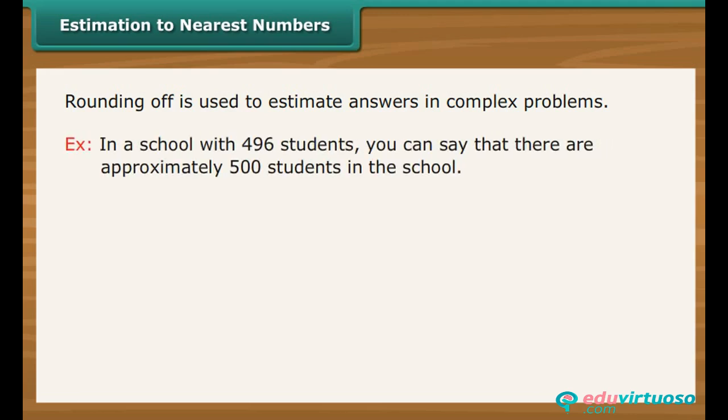Estimation to nearest numbers. As we come across large numbers, performing calculations on them becomes complex. To avoid the complexity, estimation or rounding off is used. For example, in a school with 496 students, you can say that there are approximately 500 students in the school.